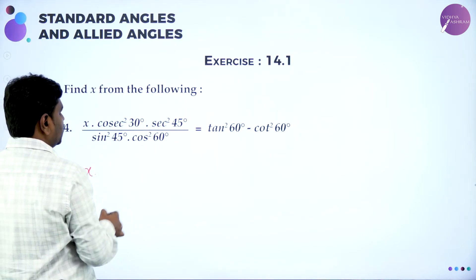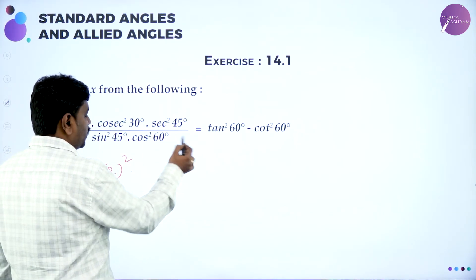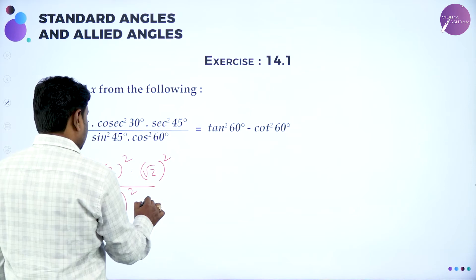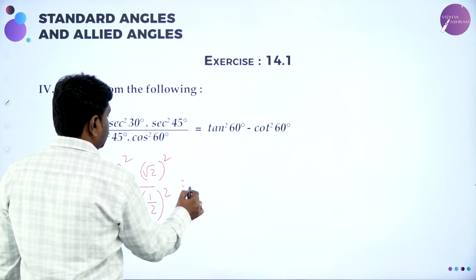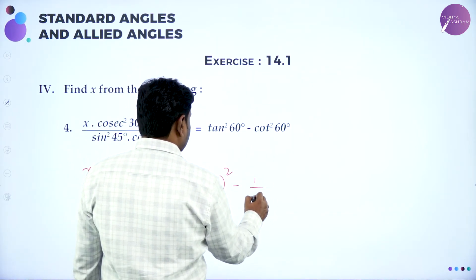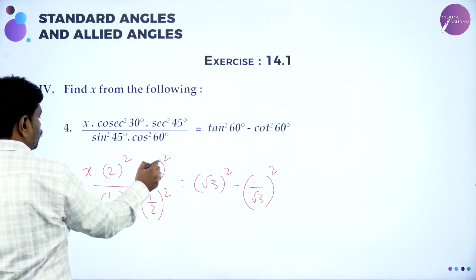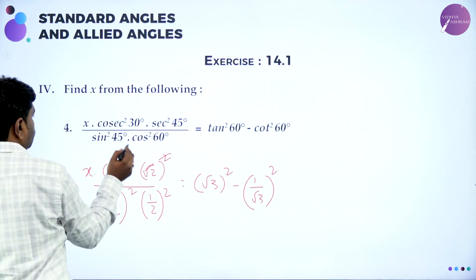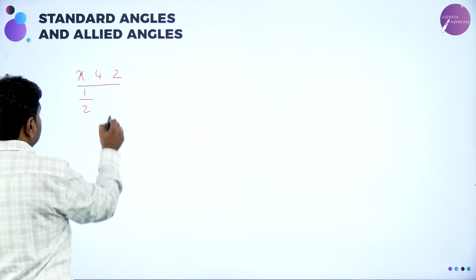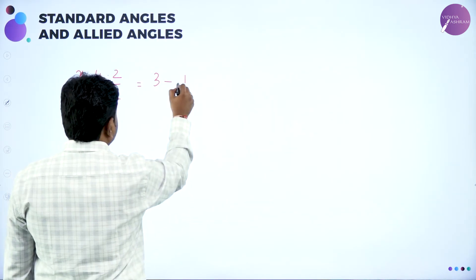Next: x · cosec² 30 · sec² 45 · sin² 45 · cos² 60 = tan² 60 − cot² 60. Cosec 30 = 2, so cosec² 30 = 2² = 4. Sec² 45 = (√2)². Sin² 45 = (1/√2)². Cos² 60 = (1/2)². Tan² 60 = (√3)² = 3. Cot² 60 = (1/√3)² = 1/3.